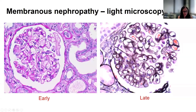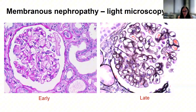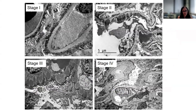Early in the disease there are very minimal changes. Here is a glomerulus with a fairly unremarkable appearance, but later in the disease you can have thickening of the glomerular basement membranes and see those characteristic lucencies, holes, or spikes along the capillary loops where the immune complexes reside. Additionally, you can see podocyte detachment, which have an enlarged and reactive plasmacytoid appearance, corresponding to the stage of membranous ultrastructurally.